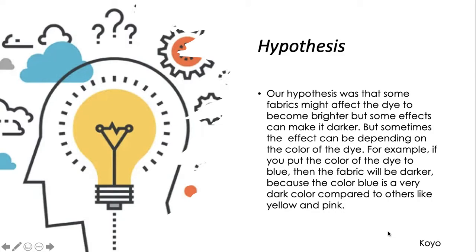Our hypothesis was that some fabrics might affect the dye to become brighter or darker. For example, if you use the color blue on the same fabric, one fabric might turn out to be darker than the other fabric.